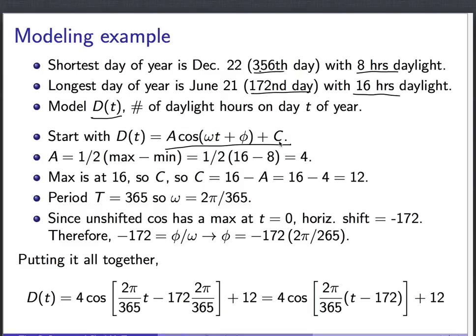And first we'll ask what the amplitude is. Amplitude should be half the maximum value minus the minimum value of the function. Well, the maximum value is 16 hours of daylight. The minimum value is 8 hours of daylight. So the amplitude is 1/2 of 16 minus 8, which is 4. So you can go ahead up here and remember that this A is actually equal to 4 now.